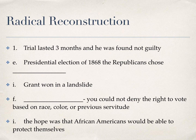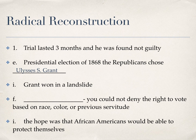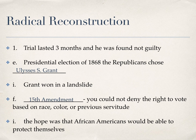In the presidential election of 1868, Republicans were not going to support Andrew Johnson — they picked Ulysses S. Grant, who won in a landslide. Immediately after he became president, they passed the 15th Amendment, which says you cannot deny the right to vote to anyone based on their race, color, or previous servitude. The important word missing, however, is gender — women still did not have the right to vote. But the 15th Amendment was passed in the hope that African Americans would be able to protect themselves as far as voting rights. This is the end of Section 2 of Chapter 17.